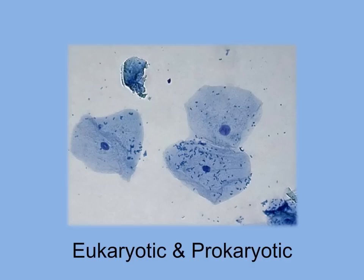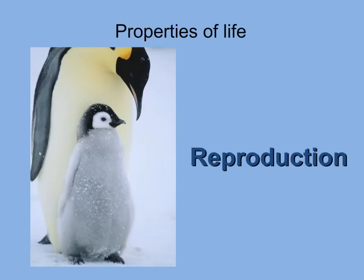The small rod-shaped cells on the eukaryotic cells are bacteria, which are examples of prokaryotic cells. Prokaryotic cells are relatively small and simple compared to eukaryotic cells. Prokaryotic DNA is found within a specific region of the cell called the nucleoid.